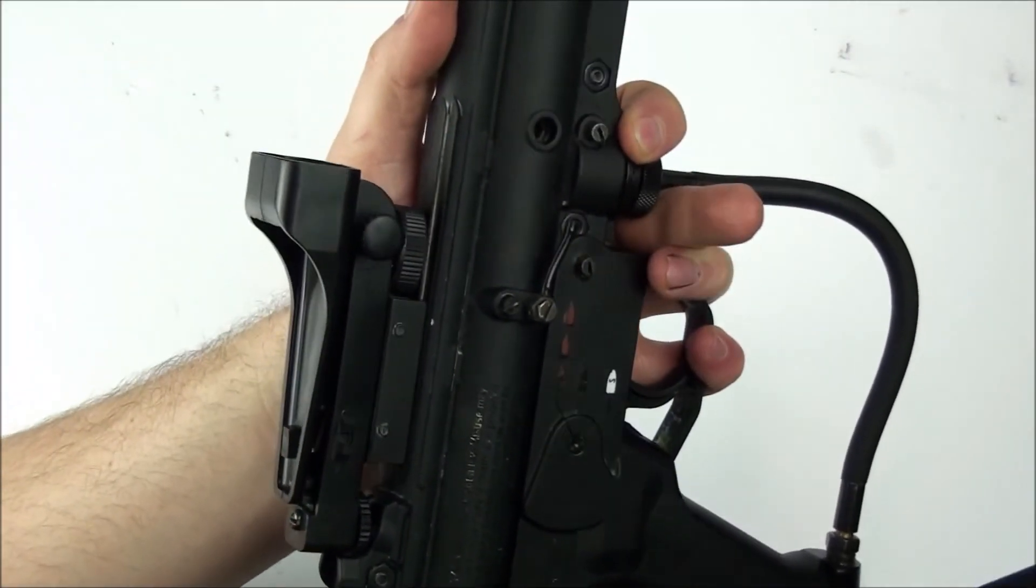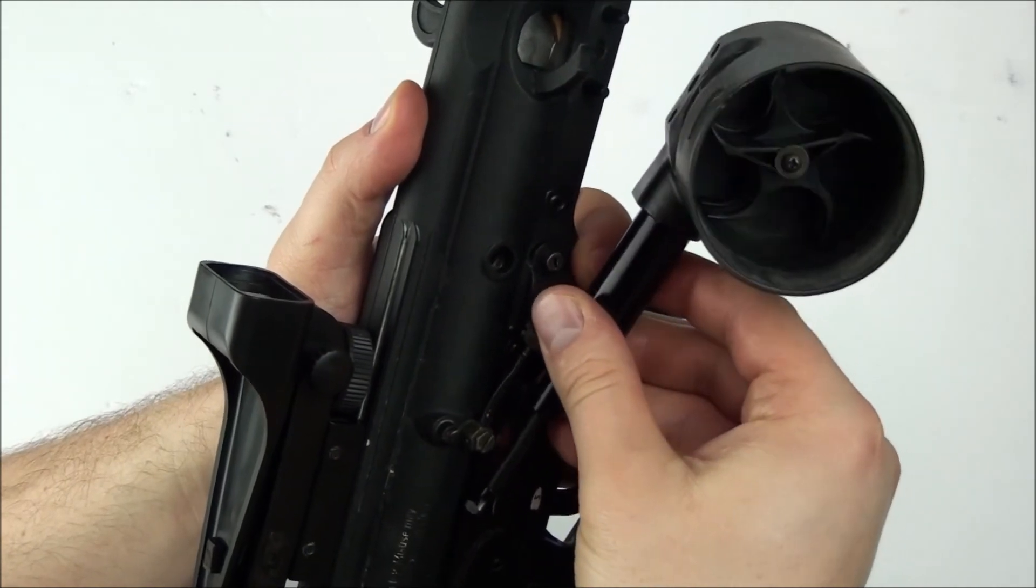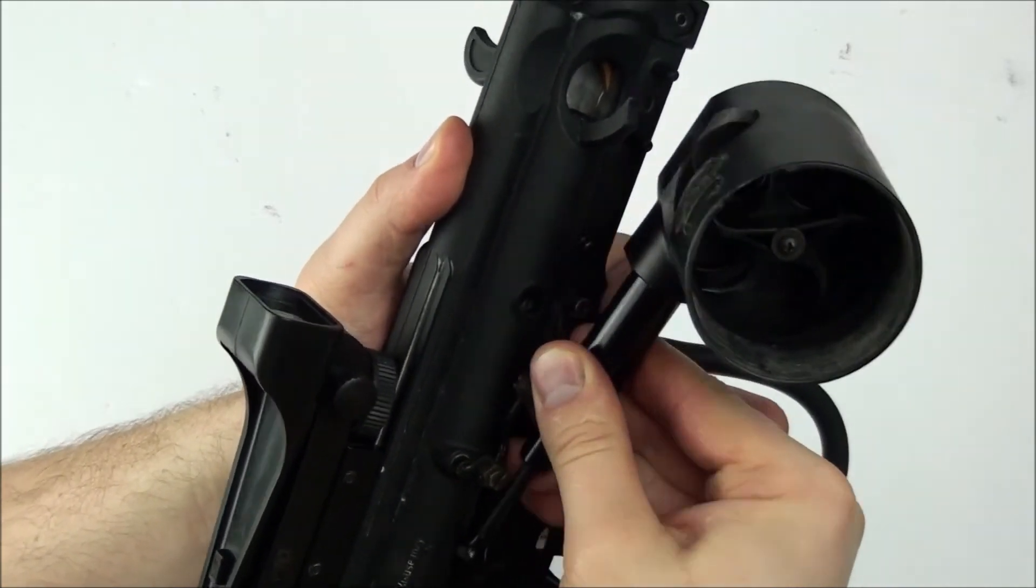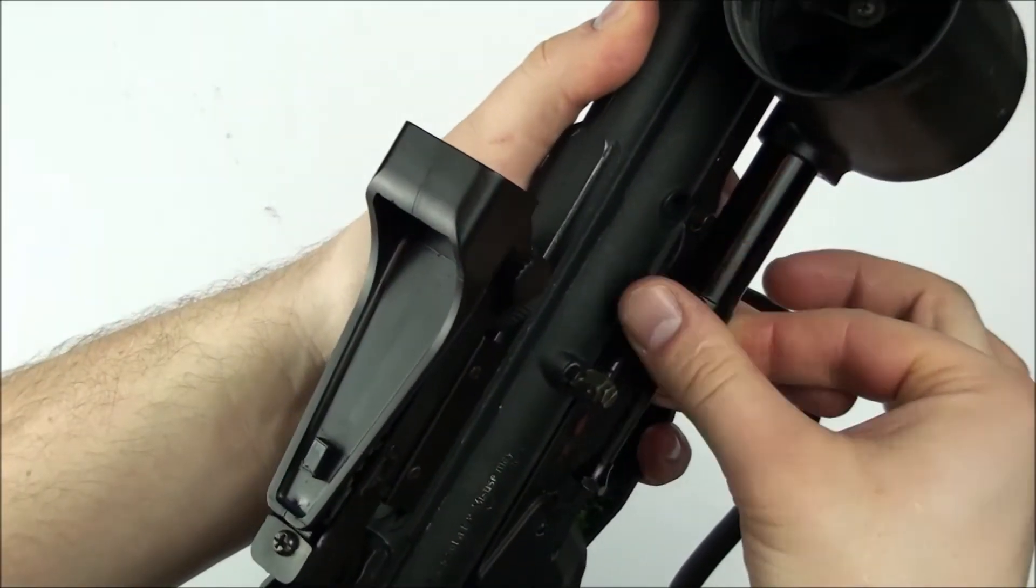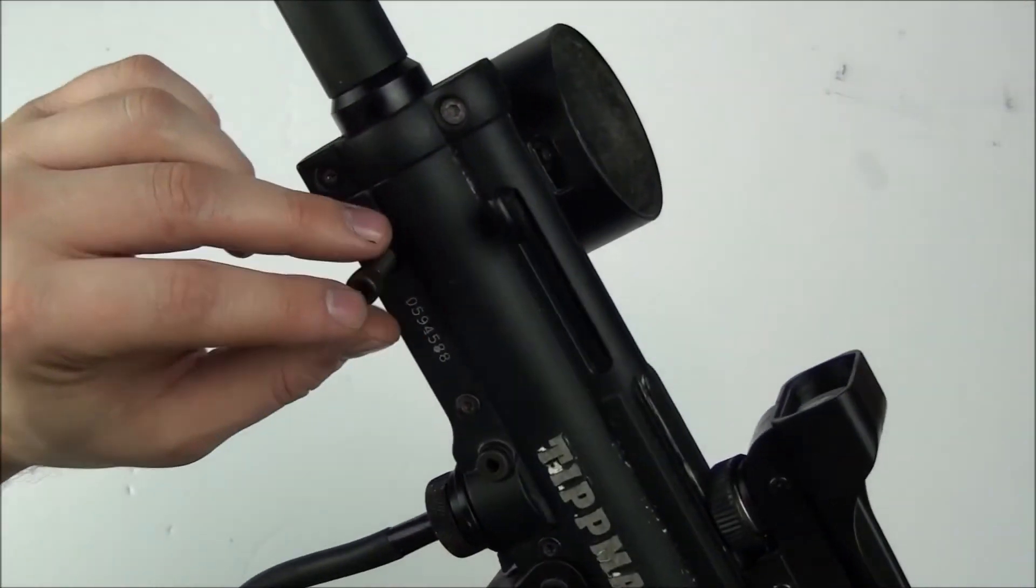Finally, we are going to reconnect the banjo fitting to the nipple hose, and then make sure the Cyclone fits back onto the marker and finish up by replacing the 3/16 screw, and we are done like dinner!